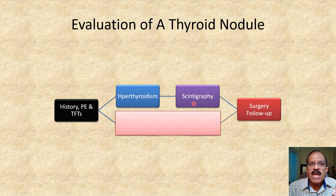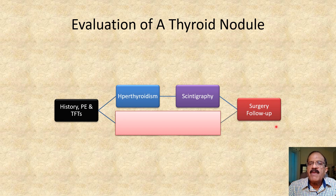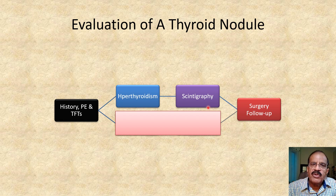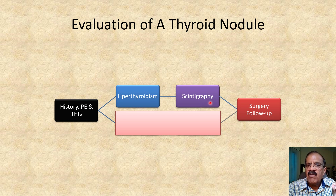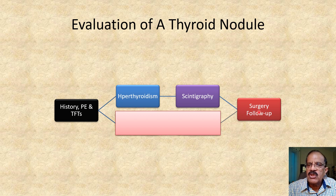Although radioactive iodine is also an option, the preferred treatment would be surgery. One might think radioactive iodine would destroy the entire thyroid tissue, but that will not happen, because at this stage the normal thyroid tissue is not taking up iodine due to suppressed TSH. So radioactive iodine given at this stage will be concentrated only in the hyperfunctioning thyroid nodule. Radioactive iodine therapy is an option, but in my opinion surgery is the better option.